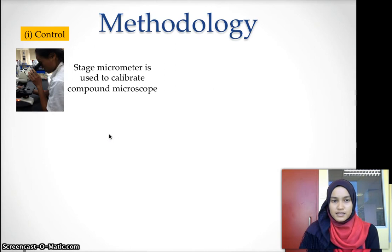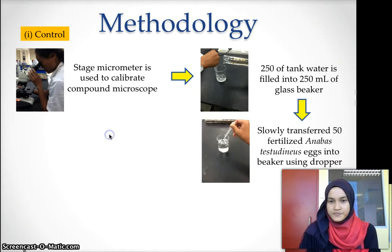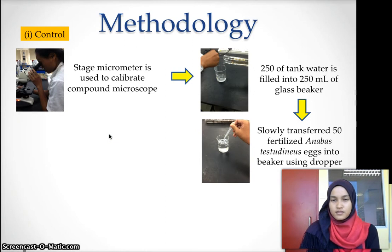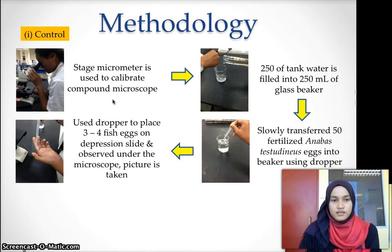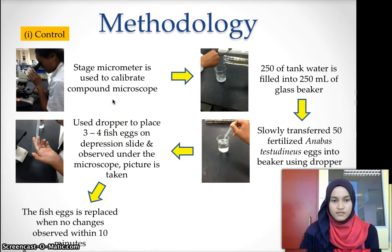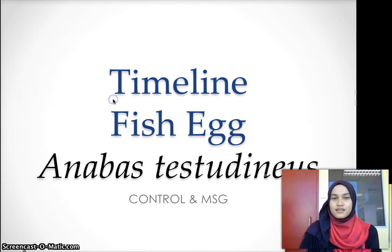For the control method, the stage micrometer is used to calibrate the compound microscope. Then 200 ml of water is filled into a 200 ml glass beaker. We transfer 15 fertilized Anabas testudineus eggs into the beaker using a dropper. 3 to 4 fish eggs are placed on a microscope slide and observed under the microscope when a picture is taken. The fish egg is replaced when no changes are observed within 10 minutes. The development of the fish egg is observed and recorded from stage to stage until it hatched.